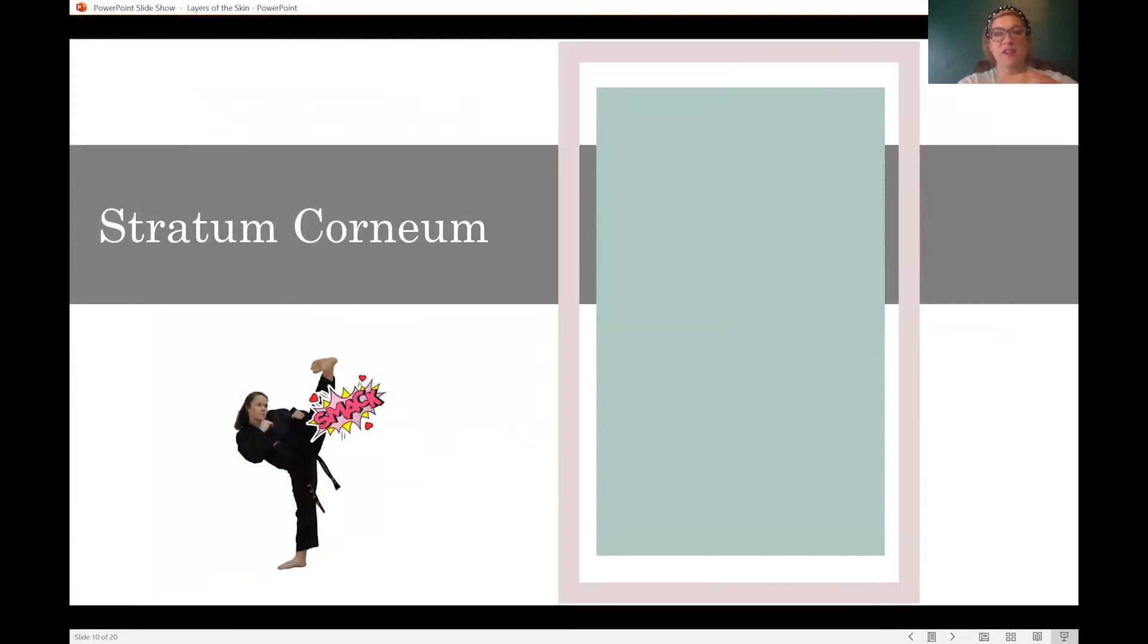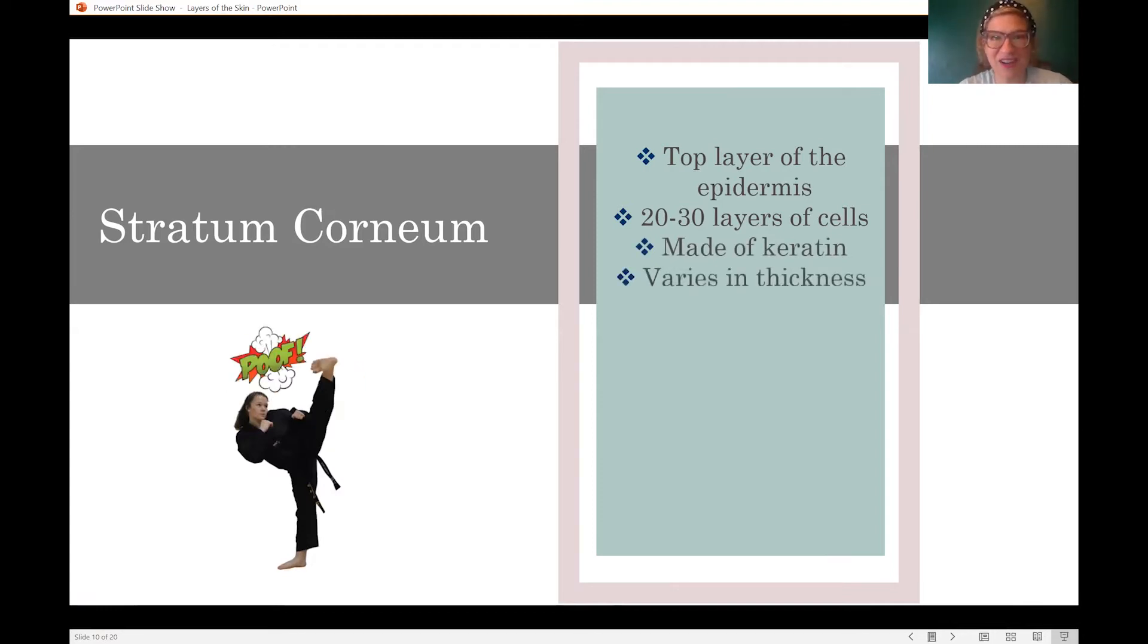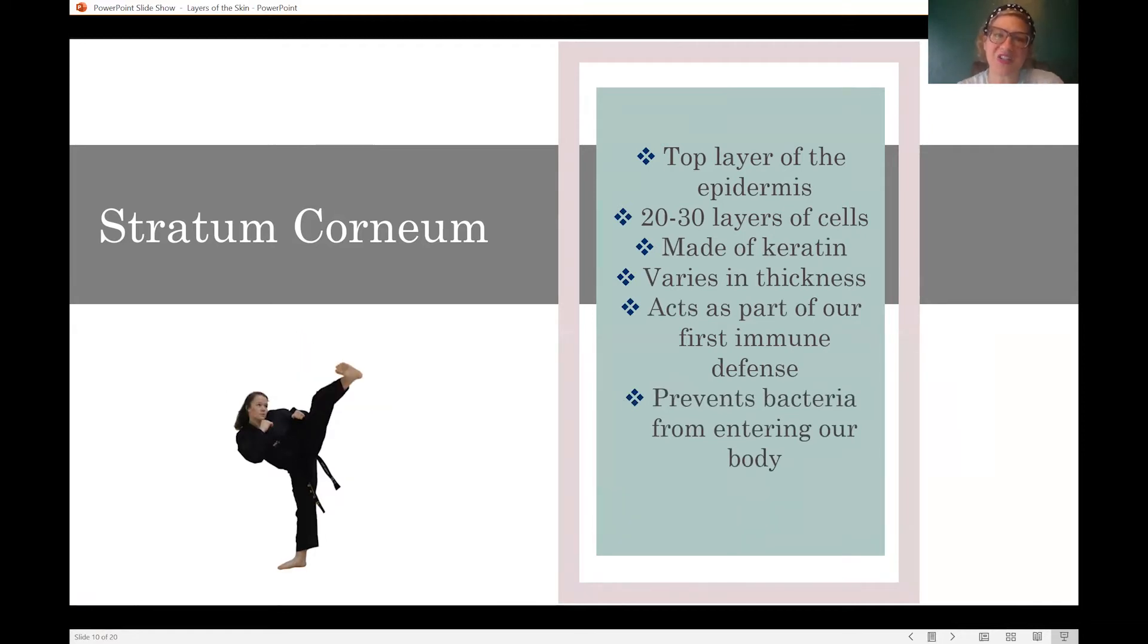We're going to start on the outermost layer, which is the stratum corneum. This is the very top layer of your epidermis. It has 20 to 30 layers of cells. So it is on the thicker side in terms of in proportion compared to some of the other layers. It is made of keratin, just like your hair, just like your nails. It varies in thickness from person to person and areas of your actual body. It serves as part of our first immune or defense. It's going to help prevent bacteria from entering into our body. So that is the stratum corneum. It is the outermost layer. Its main purpose is to really protect everything else. It's 20 to 30 layers of cells, so it's really there to protect everything else inside of your body.